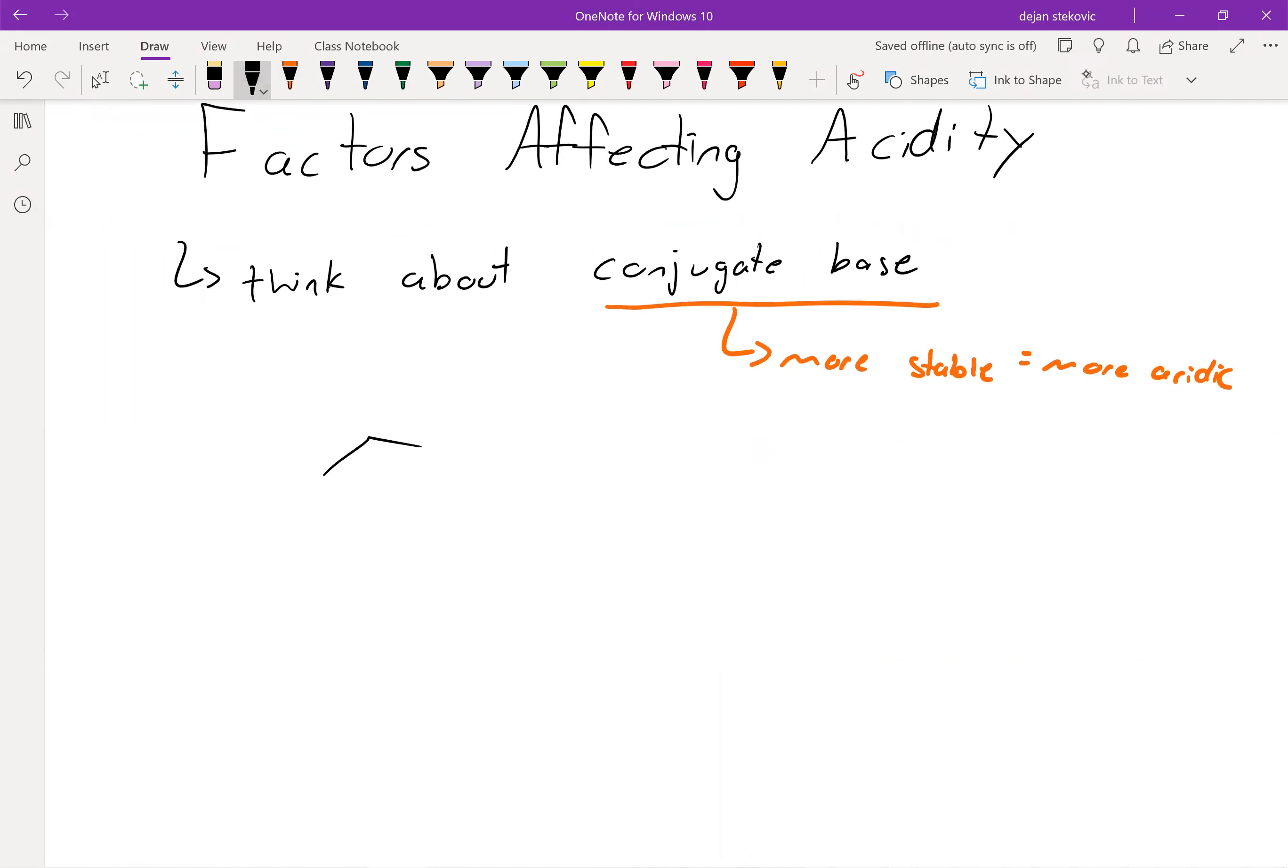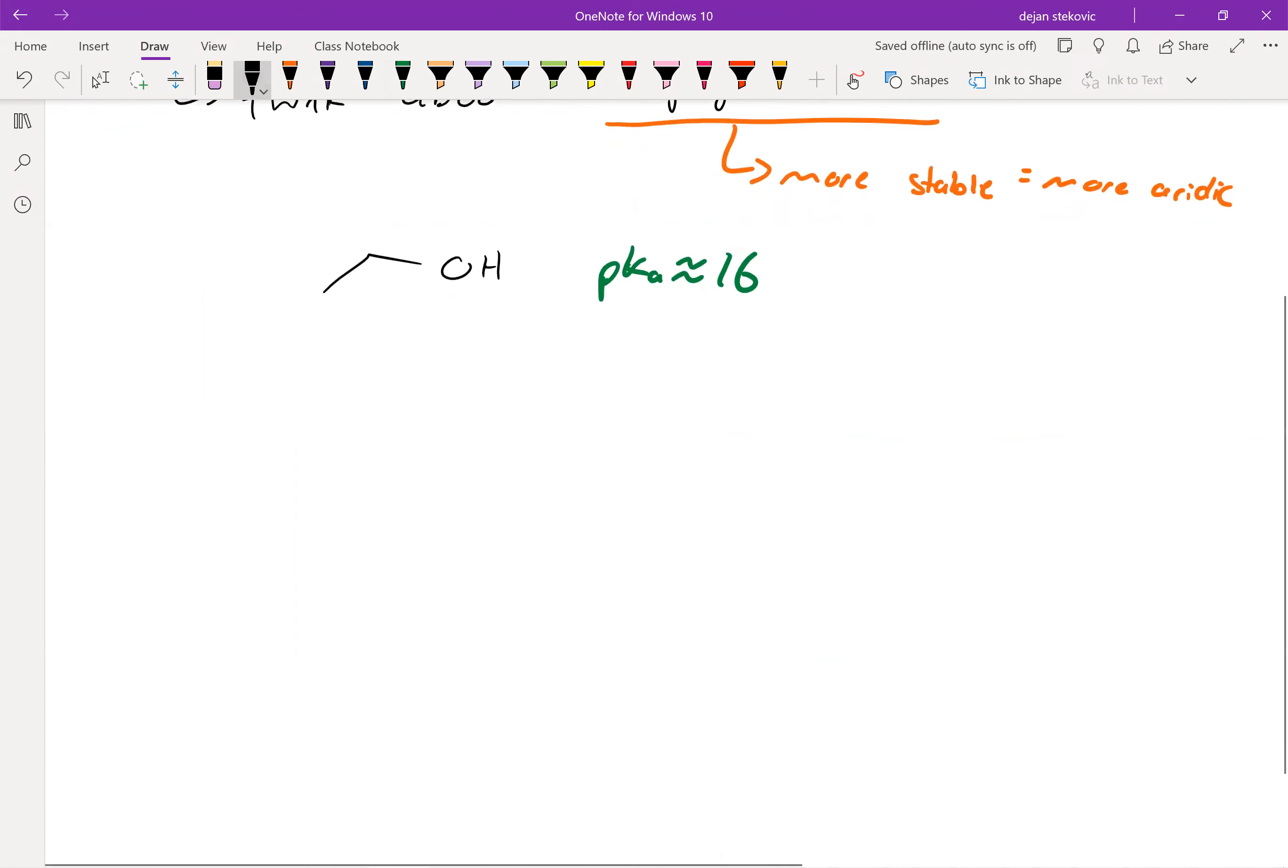So just as a frame of reference, ethanol has a pKa of approximately 16. You don't have to memorize that number or anything, but it's good to have for reference. So something that can make alcohols more acidic is the presence of resonance.